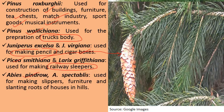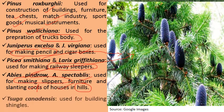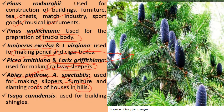Next is Abies pindro and Abies spectabilis, whose wood is used for making sleepers, furniture, and slanting roof groups of houses in hilly regions. Next is Tsuga canadensis, which is used for making building shingles.